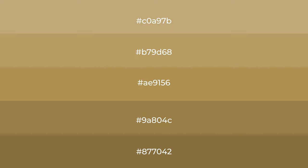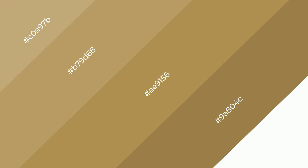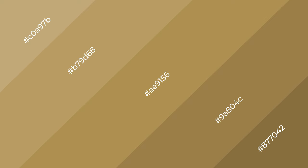To generate shades of a color, we add black to the color, and it is used in patterns and 3D effects. Layers and shades create depth and drama. Asian pear is a warm color and it emits cozier and active emotions.